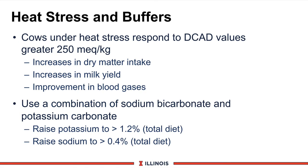The new role for buffers is heat stress. In many parts of the United States and Canada, this is a real problem. Cows under heat stress respond positively to a positive DCAD — we're talking lactating cows — and that value should be higher than at least 250 milliequivalents per kilogram of dry matter the cow consumes. There is some research that even higher numbers may be beneficial on a case-by-case basis. By doing this, we anticipate an increase in dry matter intake, which translates into greater milk yield and improved blood gases. These cows are panting and blowing off a lot of blood gases. The new products on the market combine sodium bicarbonate and potassium carbonate to raise both the potassium level over 1.2% of the total ration dry matter and sodium up around 0.4% of the total ration dry matter using these two buffer agents.